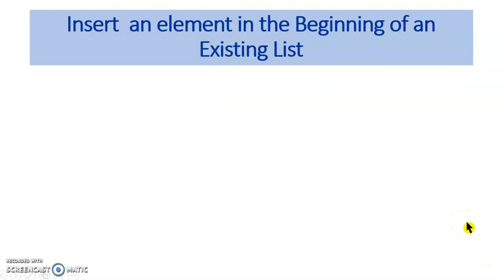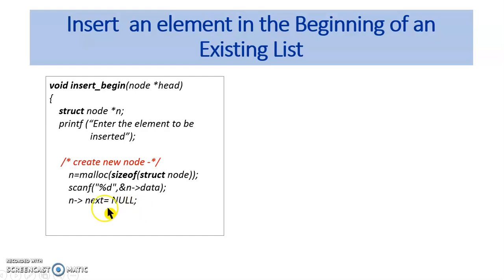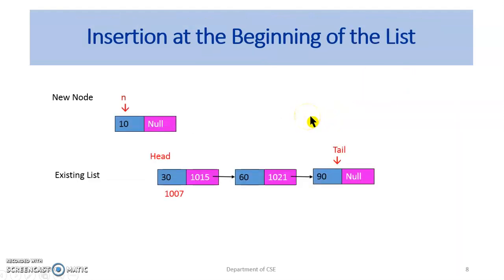Now let us see the code for inserting an element at the beginning of the list through the function insertBegin. The head pointer is passed as an argument to this function. Create a node by allocating memory through the malloc function. Get the element to be inserted. Set the data element of n as n.data and set n.next equal to null. To insert this new node at the beginning of the list, make the next pointer of n point to head. Now the new head is set as n. Let us observe how the process of insertion at the beginning of the list is carried out.